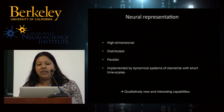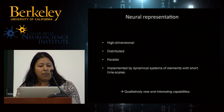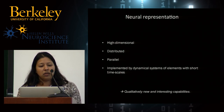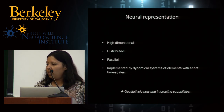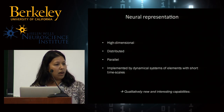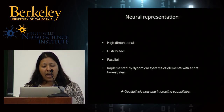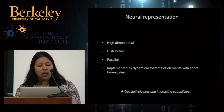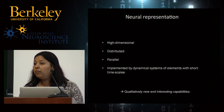Just like Penti made the case yesterday, I want to make a few observations about neural representation. It's high dimensional. It's very distributed. It's parallel. And it's implemented by dynamical systems involving elements that are each relatively short-lived or memoryless in their individual dynamics. What I want to show you is that these properties can lead to really qualitatively new and interesting capabilities.